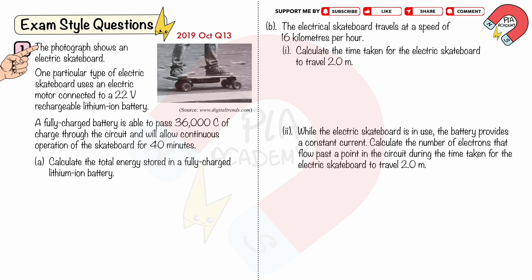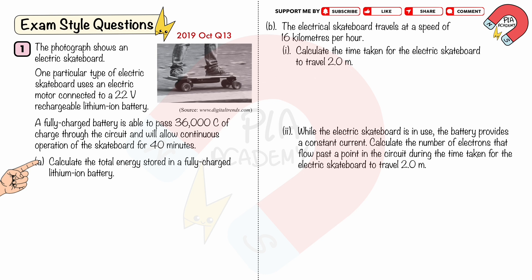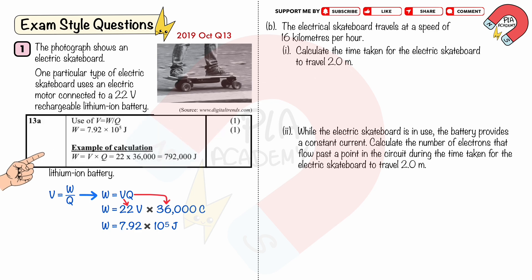Exam style question. The photograph shows an electric skateboard. One particular type uses an electric motor connected to a 22 volt rechargeable lithium ion battery. A fully charged battery can pass 36,000 coulombs of charge through the circuit and allows continuous operation for 40 minutes. Part A: Calculate the total energy stored in a fully charged lithium ion battery. Using V equals W over Q, rearranged as W equals V times Q, substituting V as 22 volts and Q as 36,000 coulombs, the total energy stored is 7.92 × 10⁵ joules. You will get two marks: one for using the equation V equals W over Q, and one for the correct answer.